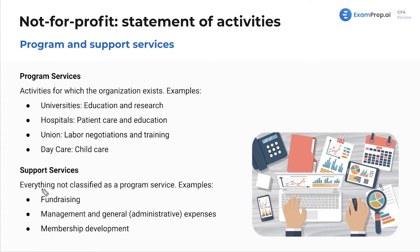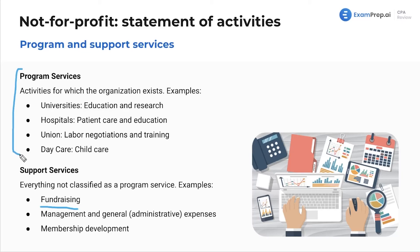Anything that is not a program activity but supports these — hence the name, support — that supports the program services is going to be support services. You don't exist to fundraise, but you need to fundraise to raise money for these activities. Management in general, admin expenses — you don't pay an accountant because that's what you do; you pay an accountant because you need to maintain your books for the not-for-profit. Membership development covers costs related to developing your members, training them, anything more admin-related. Program services are the core purpose of why the not-for-profit exists. Support services are items that keep the lights on and keep it operating day to day.